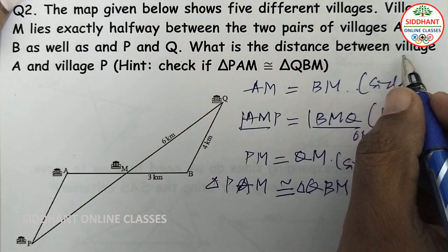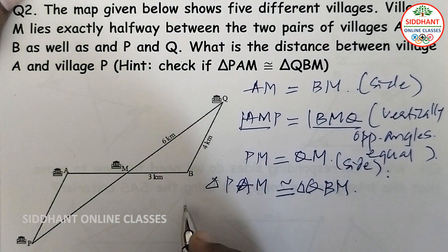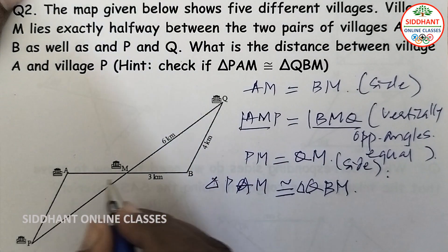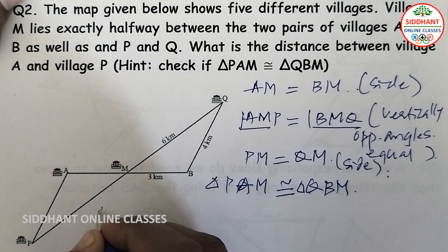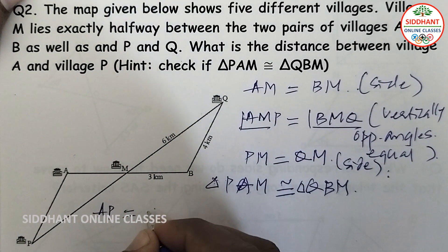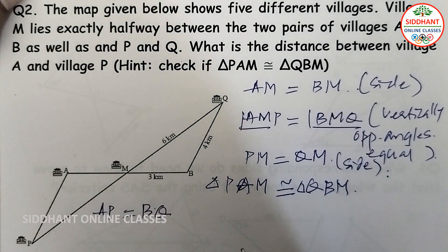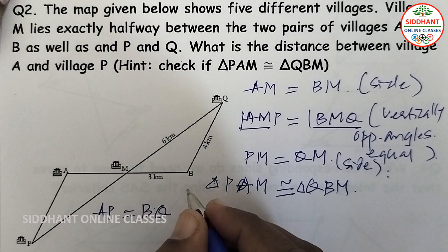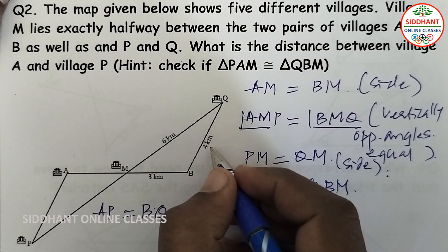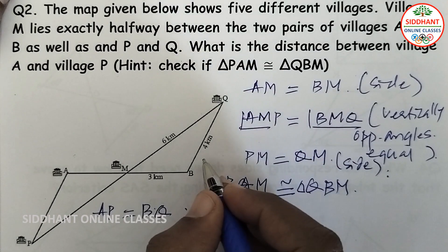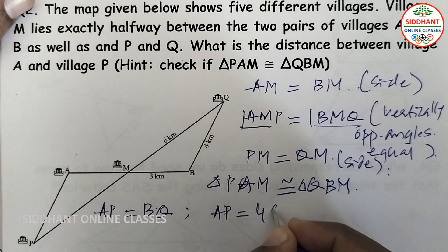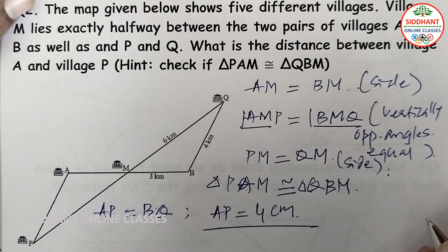Since the two triangles are congruent, AP is equal to BQ. The information for BQ is given as 4 cm, therefore AB is also equal to 4 cm.